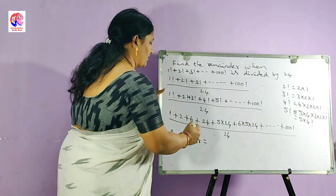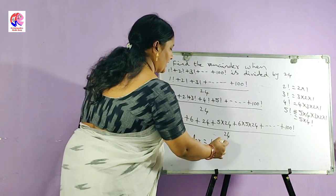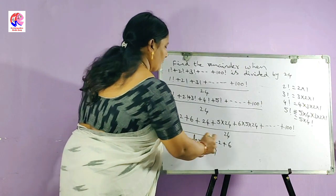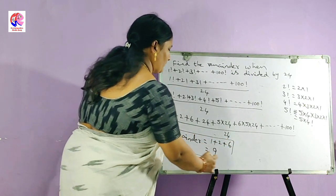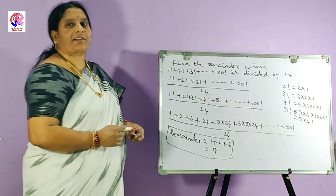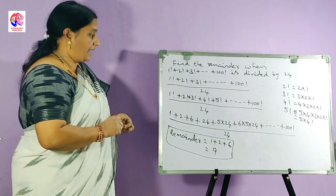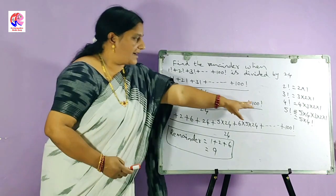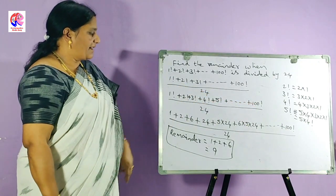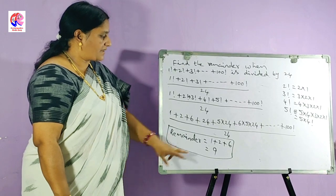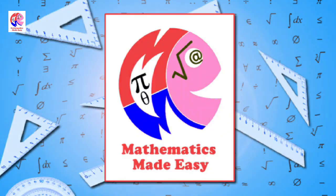So the remainder is equal to the sum of the first 3 terms: 1 plus 2 plus 6, which is equal to 9. Therefore, when 1 factorial plus 2 factorial plus 3 factorial plus so on plus 100 factorial is divided by 24, the remainder is equal to 9.